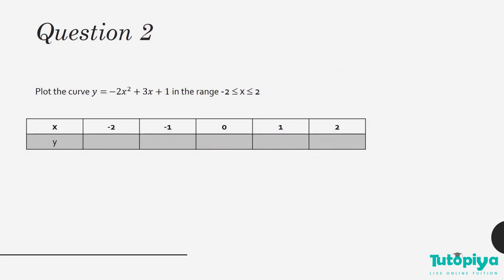You get a parabola with a minimum point — this is the quadratic graph for y = 2x² + 3x + 1. For the next question, we use the same equation but make the coefficient of x² negative: y = −2x² + 3x + 1, over the same range x = −2 to 2.